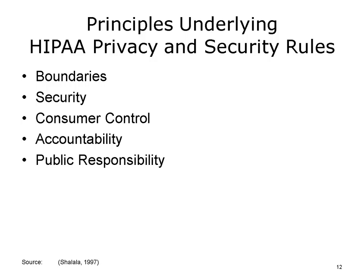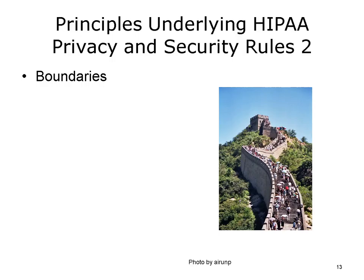As requested by Congress, in 1997 the Secretary of Health and Human Services outlined the principles by which such standards should be developed. Although the HIPAA Privacy and Security Rules that we know today were not yet written, the Secretary of Health and Human Services at the time, Donna Shalala, outlined five principles that should guide the upcoming privacy legislation and that would underlie any government rules that might be written. The principles were: boundaries, security, consumer control, accountability, and public responsibility.